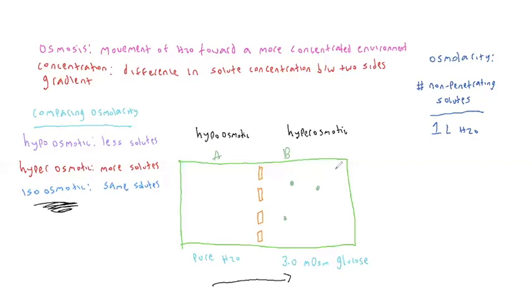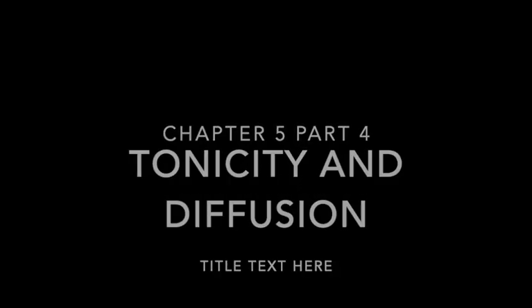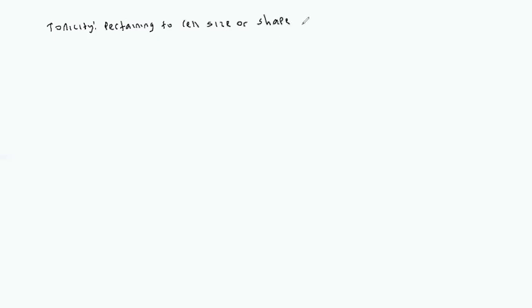That is our quick discussion on osmolarity. Now we need to move on and talk about a closely related term called tonicity, which is very important because now we're switching more to the physiology side of things. Tonicity essentially pertains to cell size or shape, and we talk about it in terms of the solution that these cells are in.